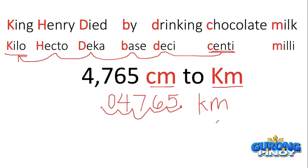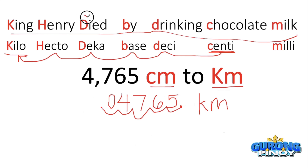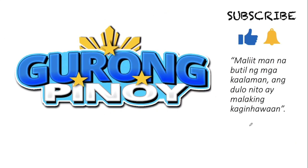As you can see, it is very easy to convert between metric units. You don't need scratch paper or a calculator. Simply memorize your mnemonic — remember that Died with capital D is for Deka, and Drinking with small d is for Deci. Make sure you know how to manipulate the slider. That's it for now — this is Gurong Pinoy. Don't forget to subscribe, like our video, and hit the bell button. A small drop of knowledge leads to great convenience. Maraming salamat — until our next video!